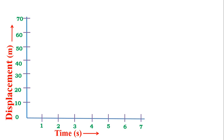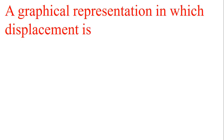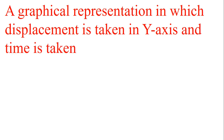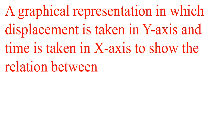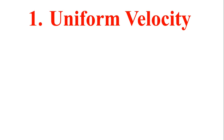If we plot the graph, it may look like this, or it may not — it may look like another type. A graphical representation in which displacement is taken on the Y axis and time is taken on the X axis to show the relation between displacement and time is called a displacement time graph. We are going to present three different types of motion of a body graphically.